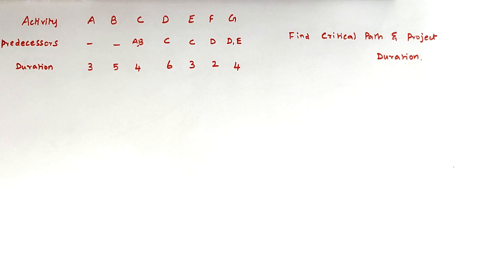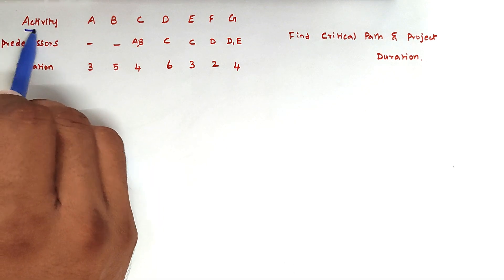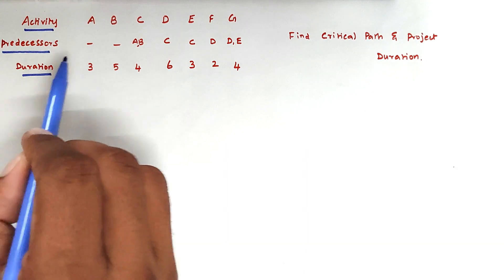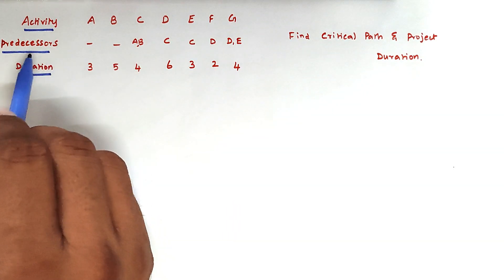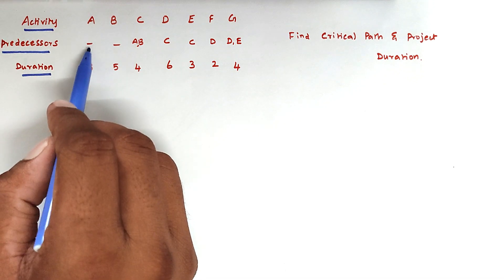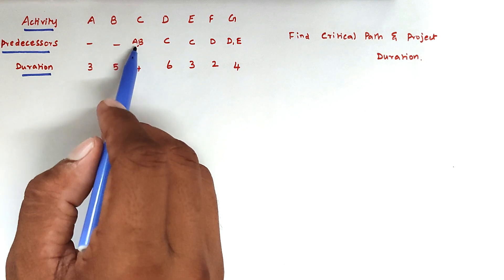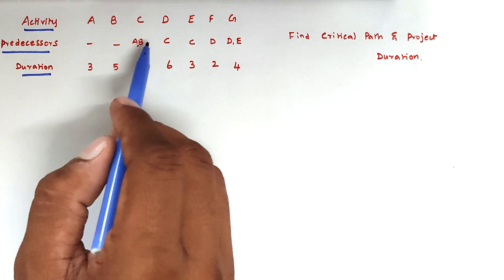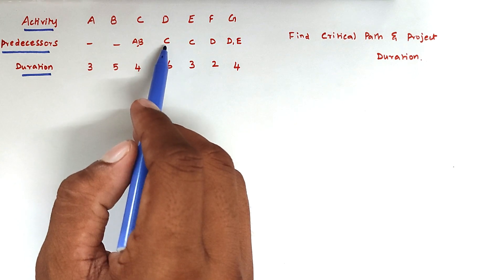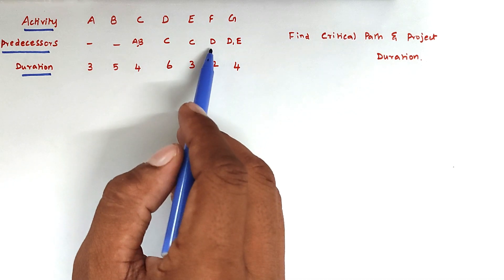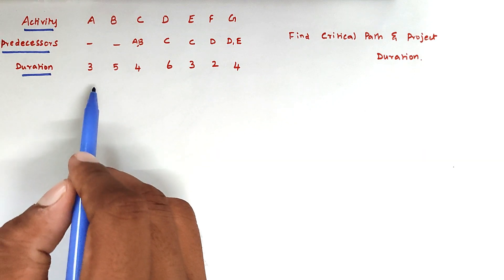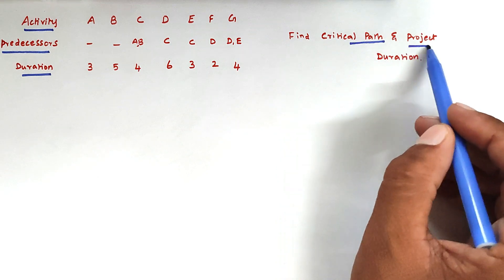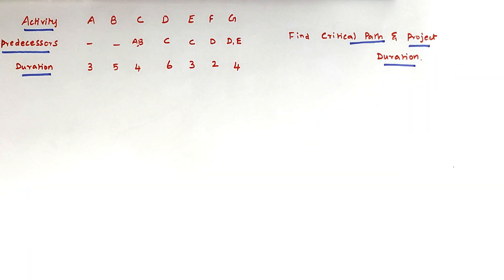Hello friends, welcome to Civil Engineering Exam. Today we are going to see a problem related with construction planning and scheduling. There are seven activities A, B, C, D, E, F, G with corresponding precedence relationships and durations given. We have to find out the critical path and the project duration, that is the critical duration.